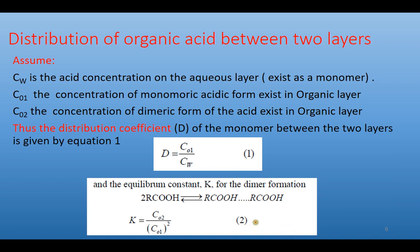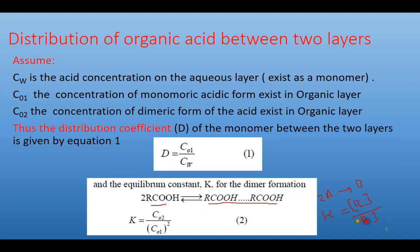If we assume a two-phase equilibrium system — aqueous and organic — then when distribution occurs, two monomers associate to form the dimer as shown. The equilibrium in the organic layer gives us: K (equilibrium constant) = [dimer] / [monomer]². The equilibrium constant for dimer formation equals the concentration of the dimer divided by the square of the monomer concentration.